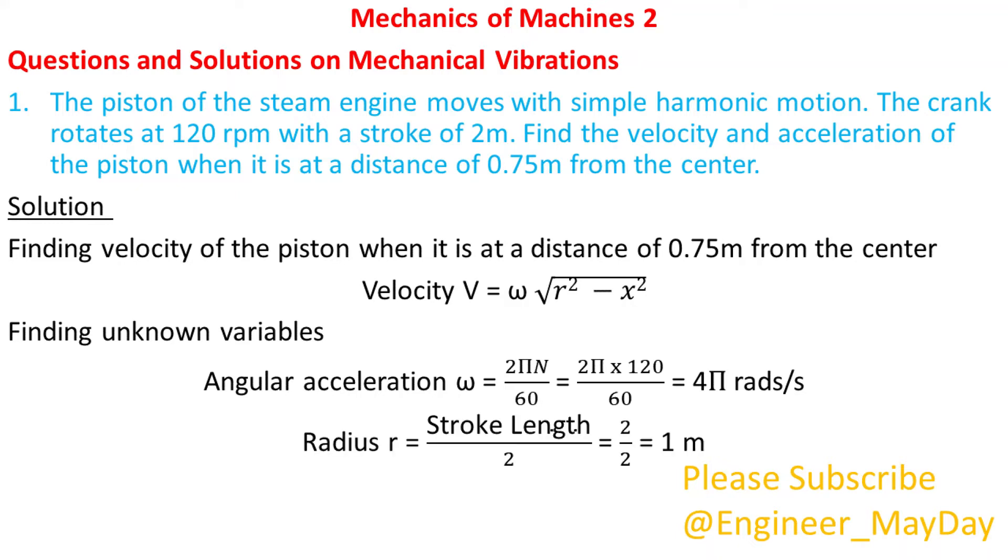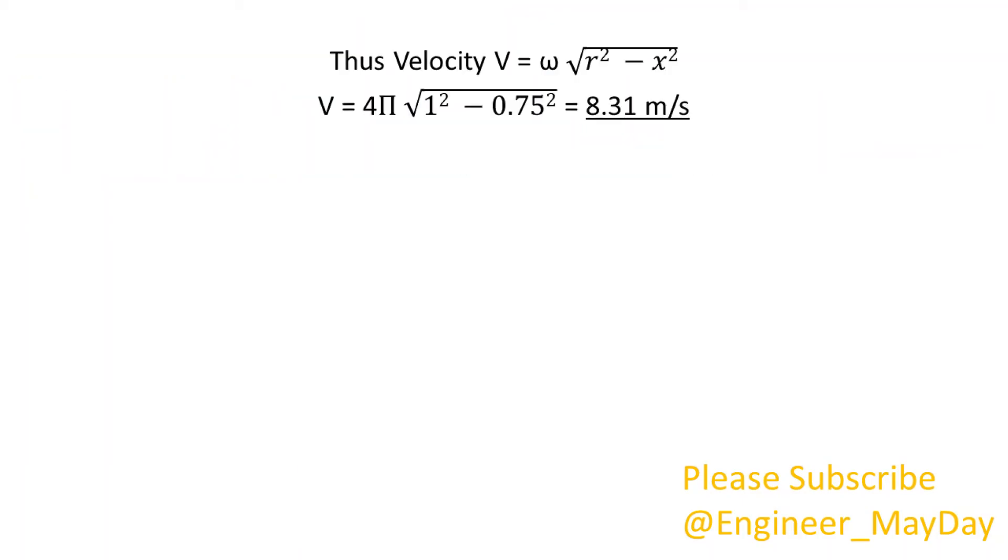Radius r is half the stroke length, thus equal to 1 meter. And x is given as 0.75 meters. Thus velocity V is equal to 8.31 meters per second.